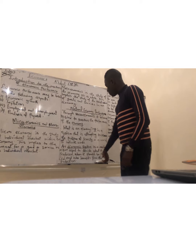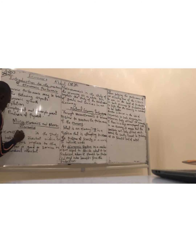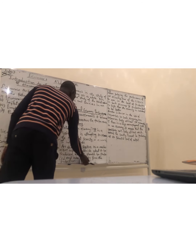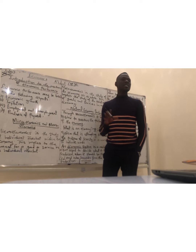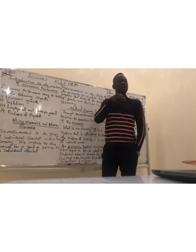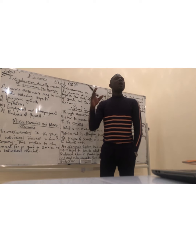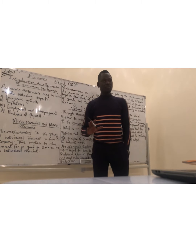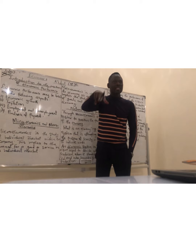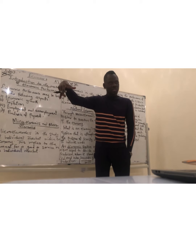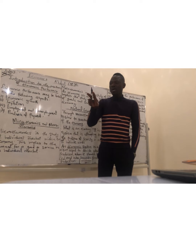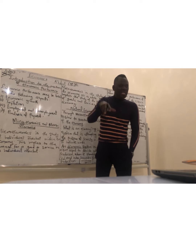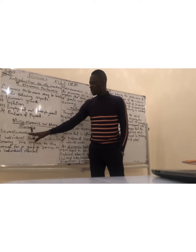Microeconomics is the study of the individual market within an economy. This implies the demand for goods and services in an individual market. So let's assume we're talking about the market for housing — the market for housing is microeconomics because it only studies housing within the economy. The market for education is only education within that economy. When we need to base the performance of an economy on a specific market, we are talking about microeconomics.